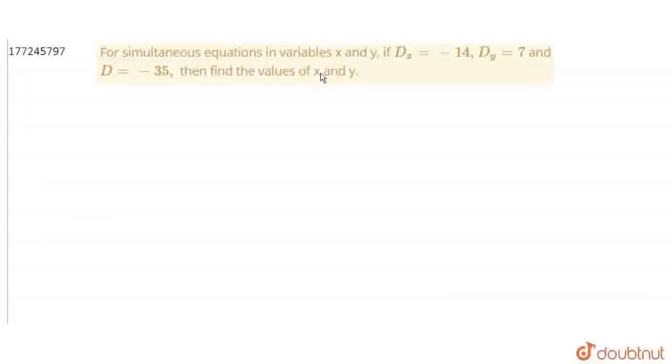Question says that for simultaneous equations in variables x and y, if dx is minus 14, dy is 7 and d is minus 35, then we have to find the values of x and y.